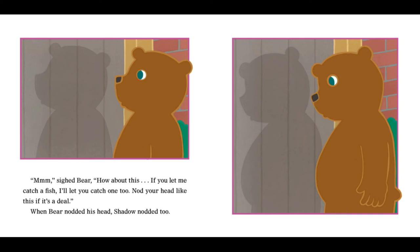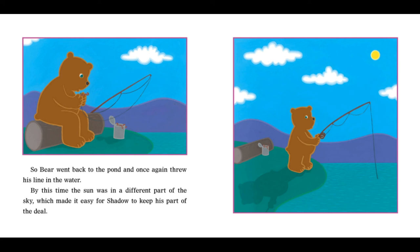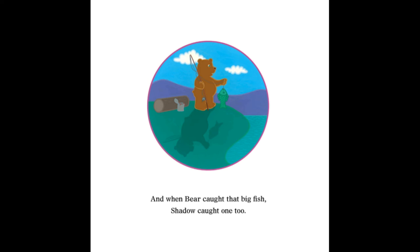Sighed Bear, how about this? If you let me catch a fish, I'll let you catch one too. Nod your head like this if it's a deal. When Bear nodded his head, Shadow nodded too. So Bear went back to the pond and once again threw his line in the water. By this time, the sun was in a different part of the sky, which made it easy for Shadow to keep his part of the deal.